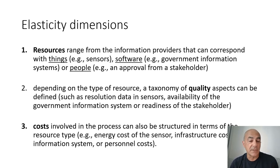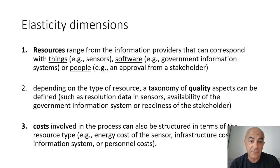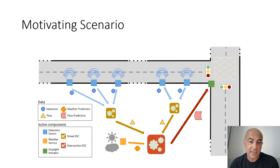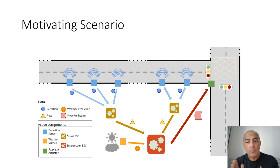In these three dimensions, we can define different ways of how the blockchain can actually evolve depending on the resources, quality, or costs defined. This adds a very important aspect to smart contracts. As a motivating scenario, I have picked a street crossing — essentially two streets. Imagine a street equipped with sensors that can detect how many cars are going, so we can predict the flow. At a crossing, we would like to adapt the traffic lights in this smart city setting.